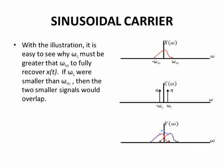Notice on the right that x of omega goes from negative omega m to positive omega m. The carrier signal c of omega is two delta functions, one at omega c and one at negative omega c. The magnitude of omega c is smaller than the magnitude of omega m.